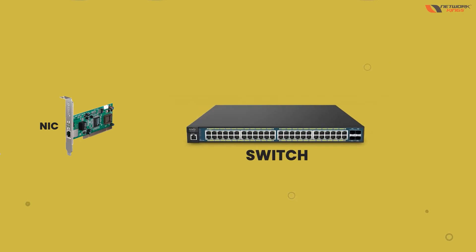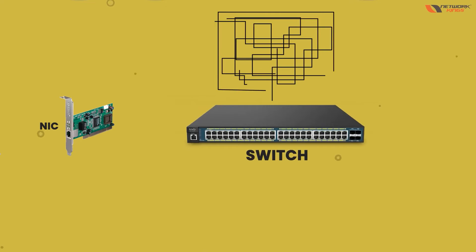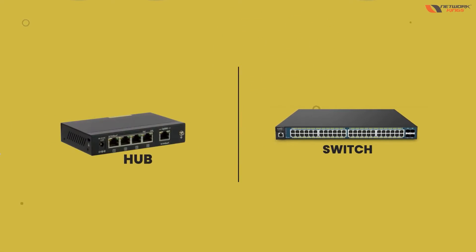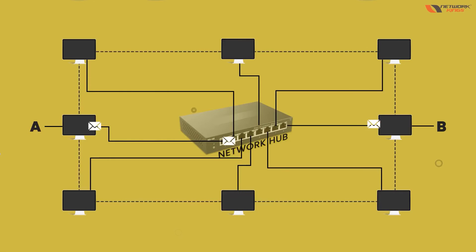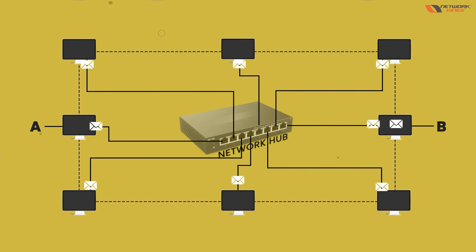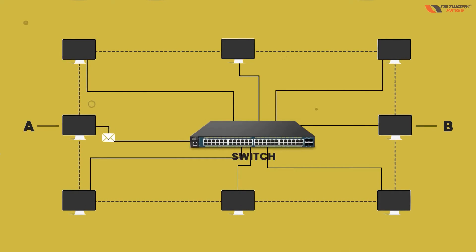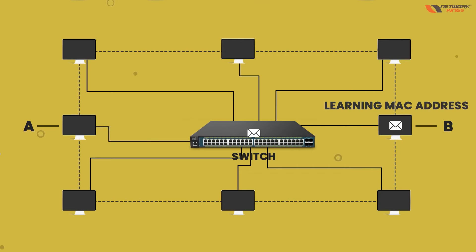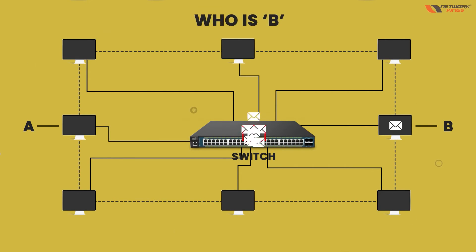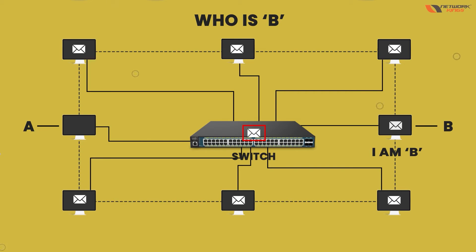Then we have a switch, which is a more powerful device where we connect all computers, and there is no broadcast problem. If we replace the hub with a switch, the switch will only send from computer A to computer B, because the switch learns MAC addresses. It knows which packet is going to which computer, so it only sends to the correct destination, and other computers will reject the packet.